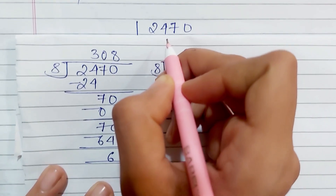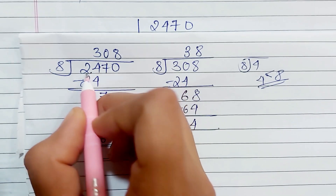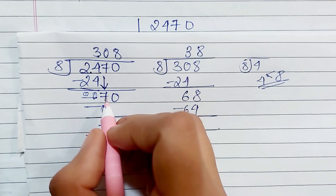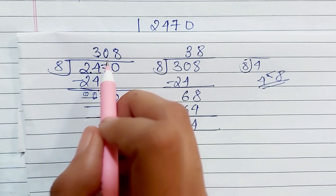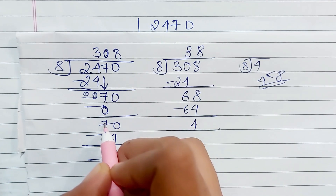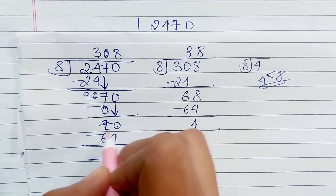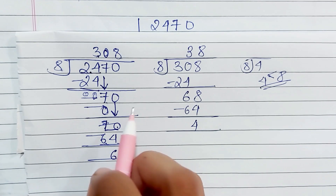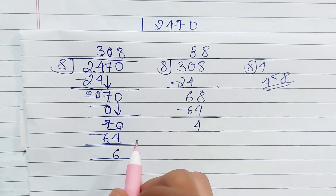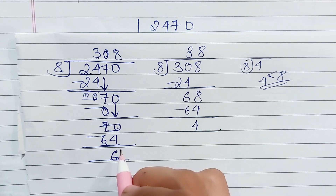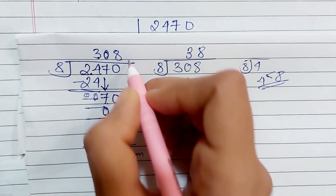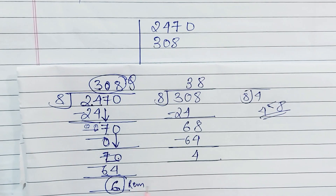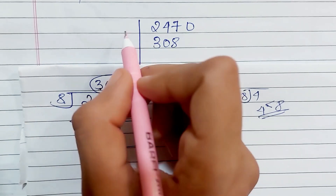Let's start. We will constantly divide 2470 by 8. When we divide 2470 by 8, the quotient is 308 and we write the remainder on the side. We write the quotient 308 below.